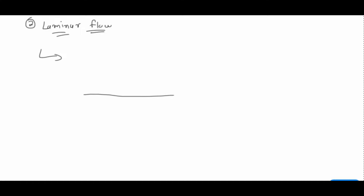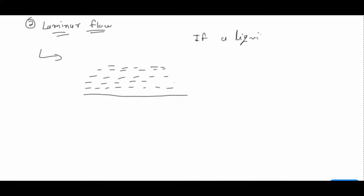If a liquid is flowing over a horizontal surface with a steady flow, it moves in layers — as you can see clearly in the figure. The first condition for laminar flow is that it must be a steady flow, and the second is that it moves in layers.